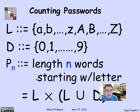A length n word can be broken up into the first character, which is an L, paired with the rest of the word, the remaining n minus 1 characters. The remaining n minus 1 characters can be either L's or D's. So the length n passwords can be expressed as the product of L with the (n-1)th power of L union D.